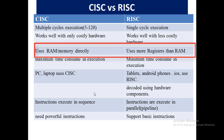CISC uses RAM — it accesses memory directly to perform operations because all the instructions are written on the microprocessor. While on the other hand, RISC uses registers rather than RAM, roughly using 20 to 30 registers for processing and storing data.